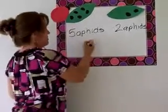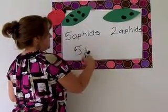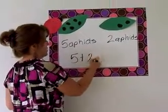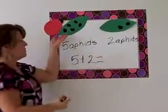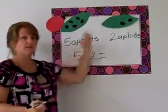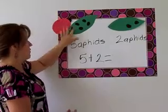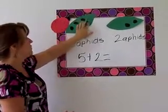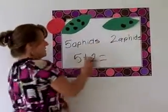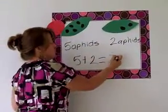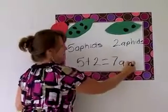So I would make my math problem five plus two equals, and the students can use the aphids on the leaf if they need to help them add them up. And we would count: one, two, three, four, five, six, seven. So five plus two is seven aphids.